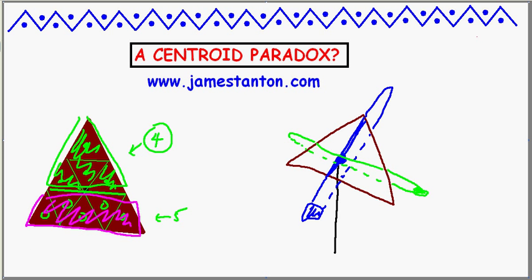Most people would argue there's no way, then, that this triangle can balance across that line right there. Yet, at the same time, that line goes through the centroid, so it should be balancing on that line.